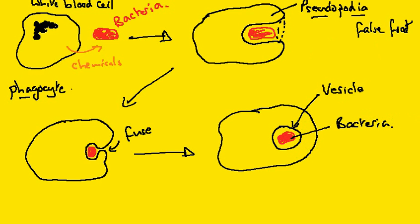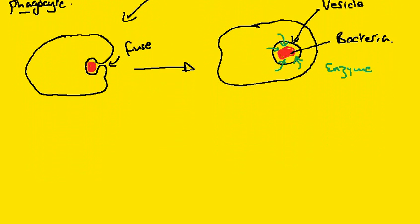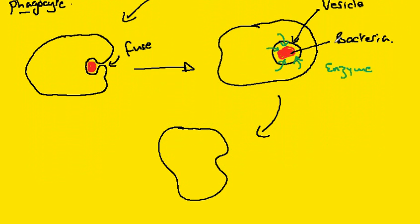The next step is that the white cell will introduce digestive enzymes into the vesicle, and that will destroy the bacterial cell. To complete our description, what often happens is that the white cell will then excrete and release the fragments of the bacteria. And that's phagocytosis — the first line of defense.